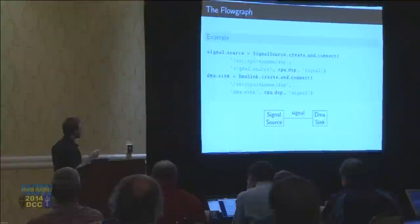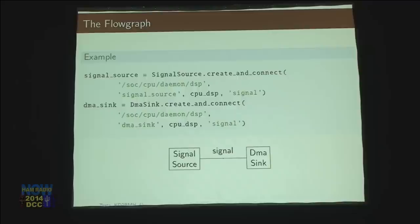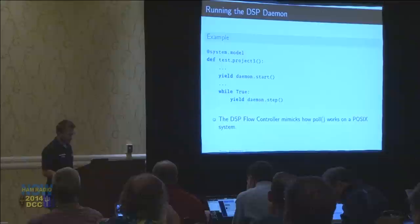We have another very simple flow graph. We have a signal source that outputs a sine wave of whatever frequency we want. Then we have the DMA sync. What the DMA sync does is take whatever is stored in that FIFO and start sending it across the bus by telling the DMA controller to do it.